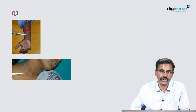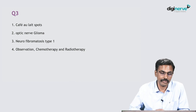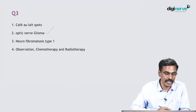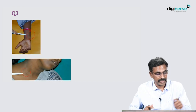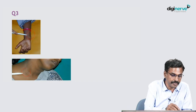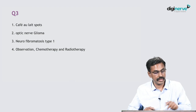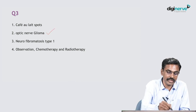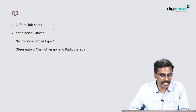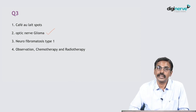She has classic café-au-lait spots. Ophthalmologically, optic nerve glioma may be seen, which is responsible for the vision loss. The syndromic association is neurofibromatosis type 1. These patients will have optic nerve glioma associated with café-au-lait spots.